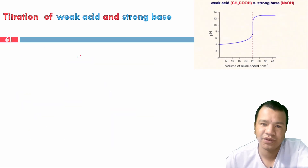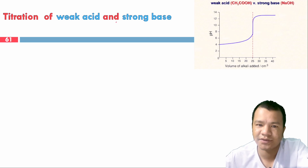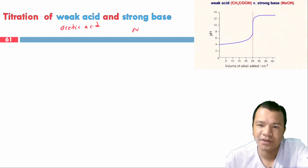Now we consider weak acid titration. A common example of a weak acid is acetic acid. In this case, we are titrating a weak acid against a strong base.